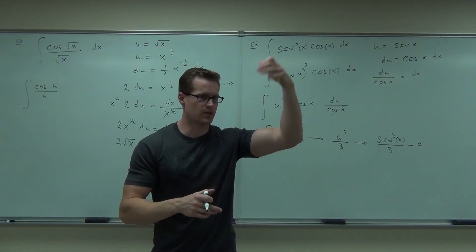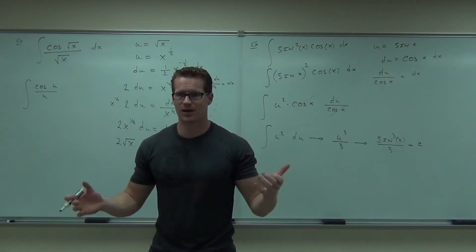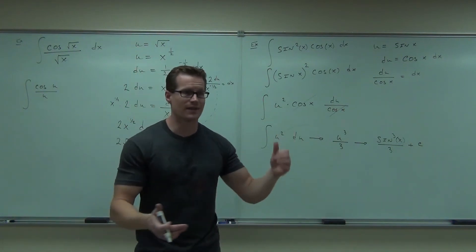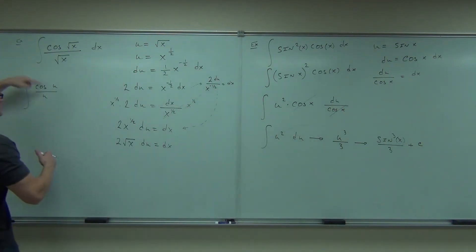You can't make it u to the negative 1 times cosine u and split it up. You don't even know how to take u to the negative 1 because it's ln u. We're not even in that part of the class. So we can't do that one anyway.